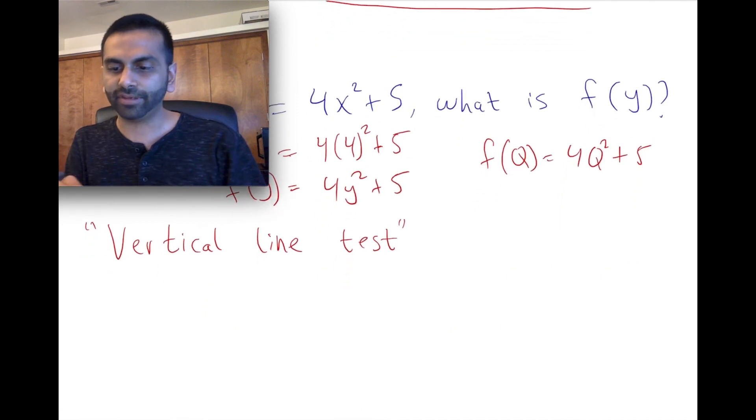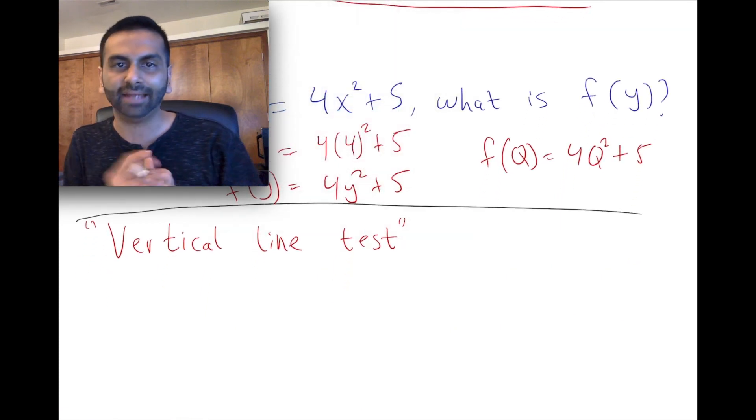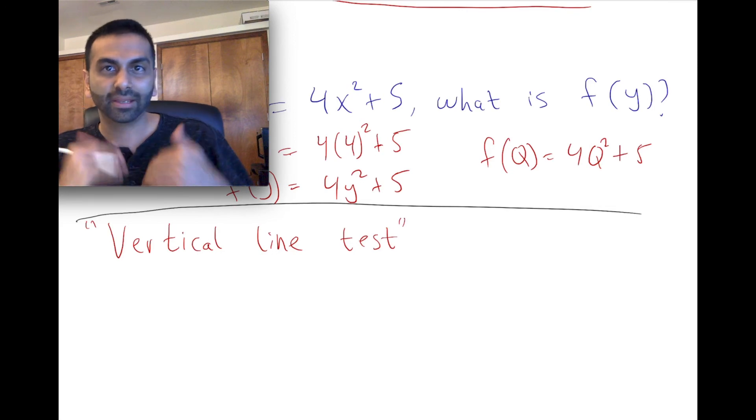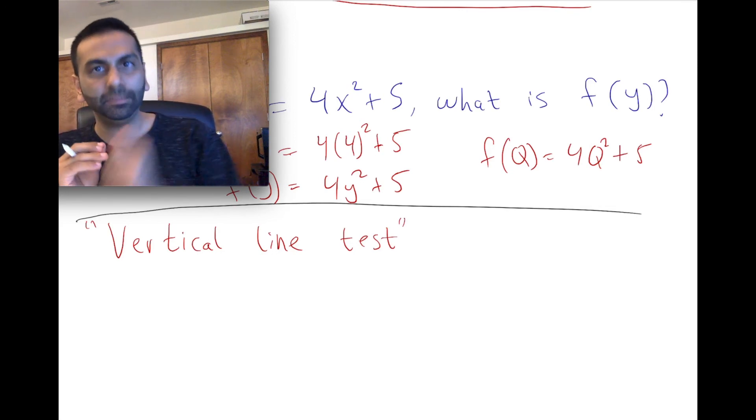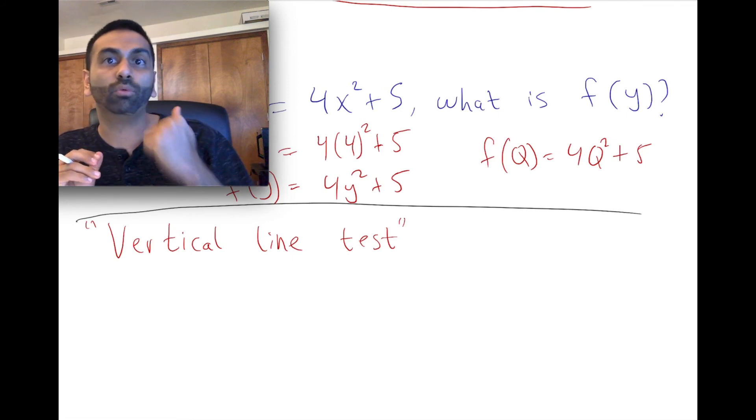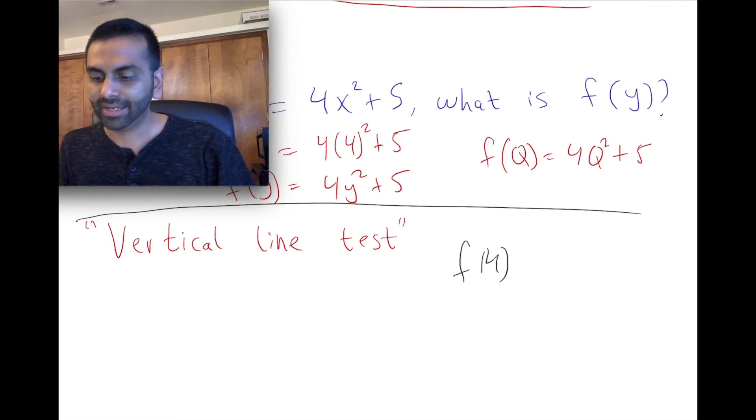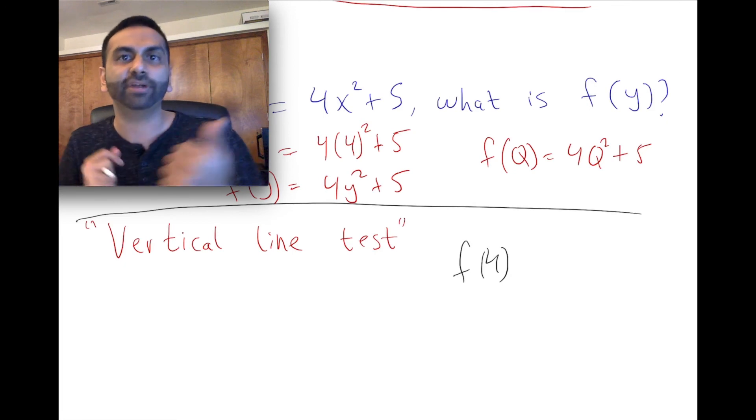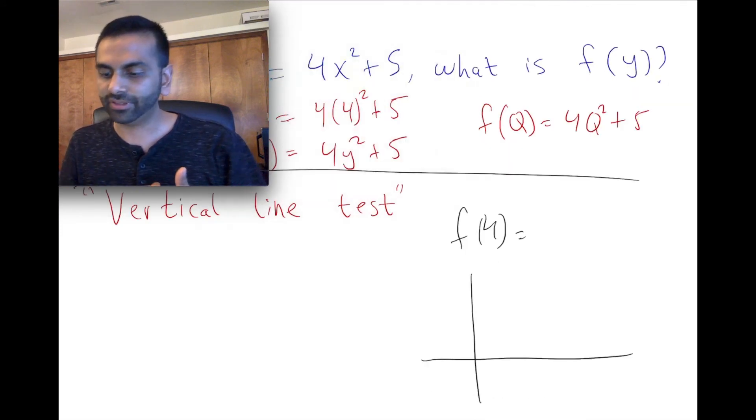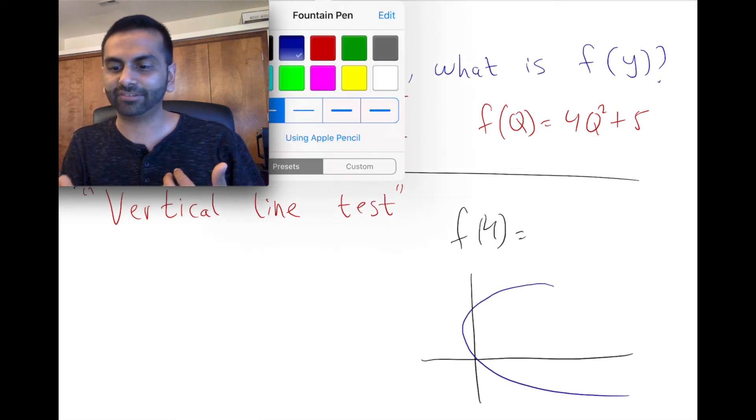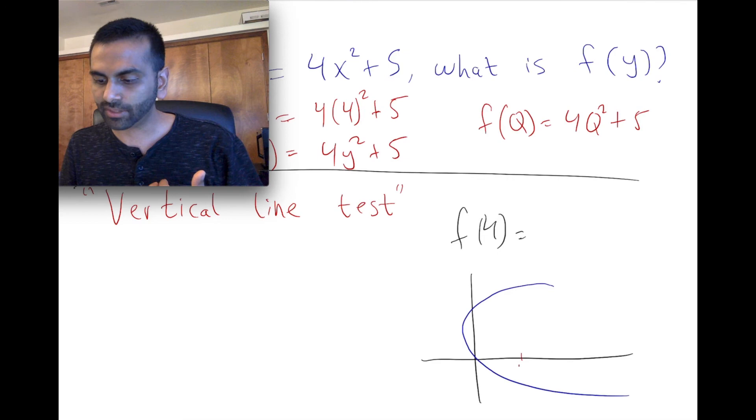A couple more things. There's this thing called the vertical line test. And here's where that comes from. The definition of a function is this. It's that for every input, there's exactly one output. So if I were to say, what's f(4), it can't be that there's two different numbers that are f(4). f(4) should be a unique number. So what that means then graphically is this, that if you were to look at your function, your function can't look something like this. If your function looks like this, and if I were to ask you, what's f(4)? Well, let's see. To find f(4), you go to where x is 4, and you find the y value.